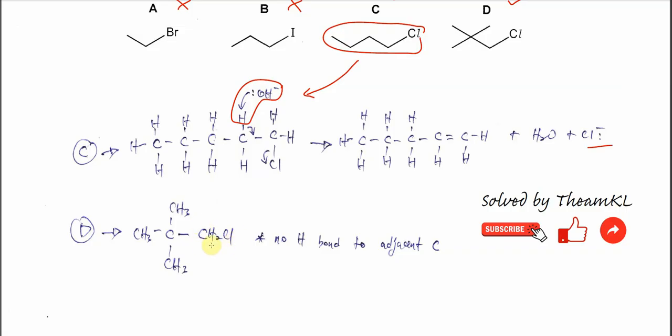For D, it cannot produce any alkene. Yes, there is CH2Cl, but the neighboring carbon has three methyl groups with no hydrogen, so it cannot undergo elimination because the neighboring carbon has no hydrogen bonded to it.